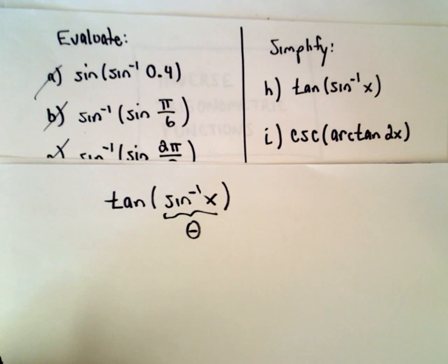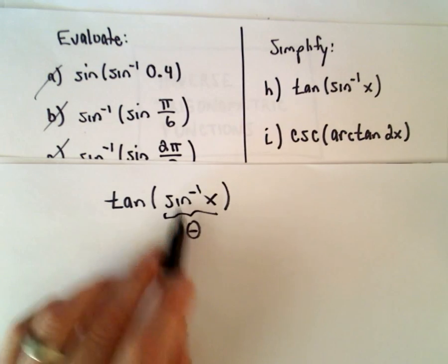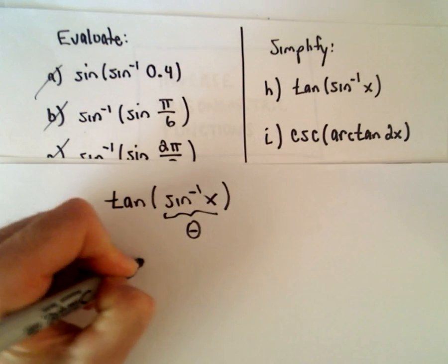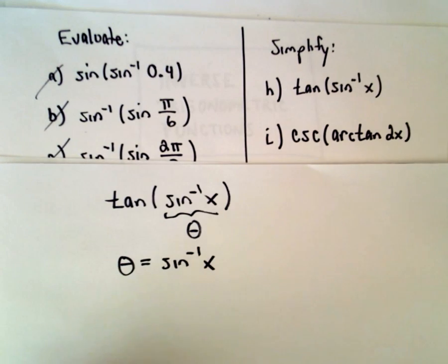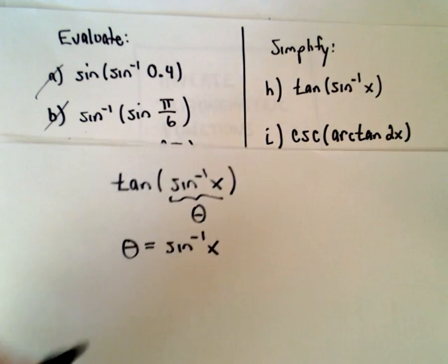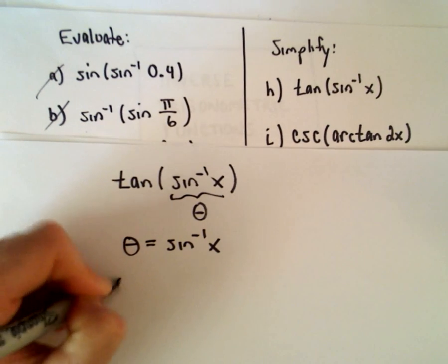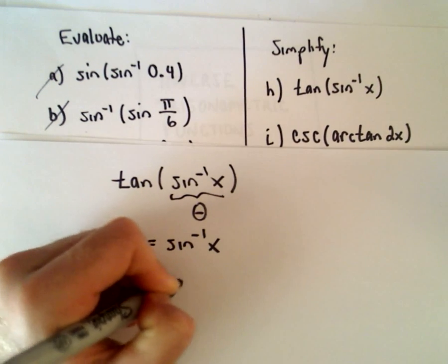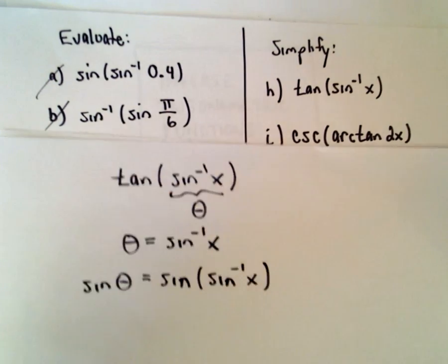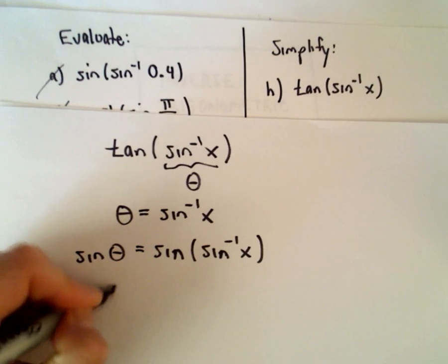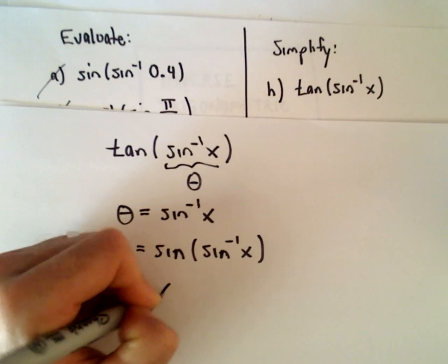So we've got tangent of arc sine of x. I'm going to say theta is the same thing as arc sine of x or inverse sine of x, however you want to say it. We can take the sine of both sides, and in this case we'll simply be left with sine of theta equals x.